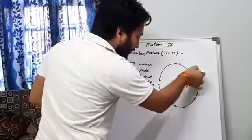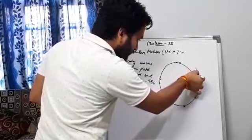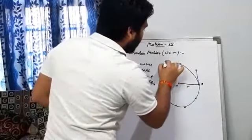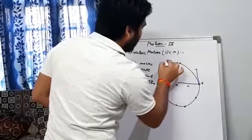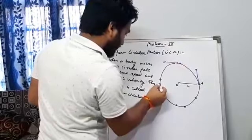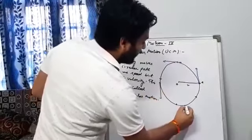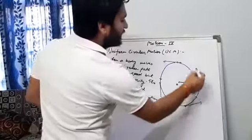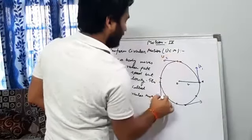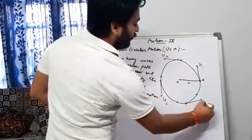We will just draw a tangent like this. We will draw a tangent like this and we will draw a tangent like this. So, these tangents will represent the velocity at that particular point.